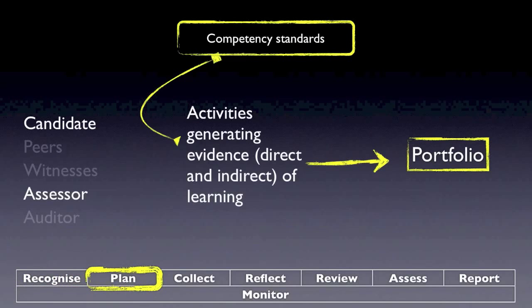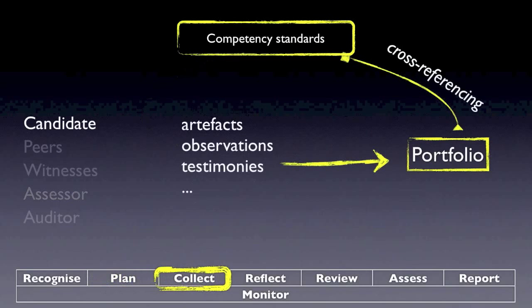The second stage is to plan the activities that will generate evidence, which can be direct or indirect evidence. Then comes collection: the candidate creates artifacts, there is observation of their performance, and there are testimonies from peers, customers, and clients — all this information goes into the portfolio. The candidate will also cross-reference the evidence collected with competency standards, to say which piece of evidence matches which competency standard.